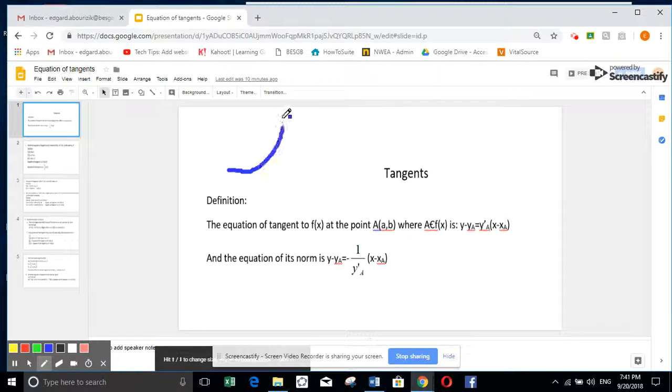Let me repeat. You have a point here and you do the tangent to the curve and the slope of that line is nothing else than the derivative at the point of tangency, which is a.